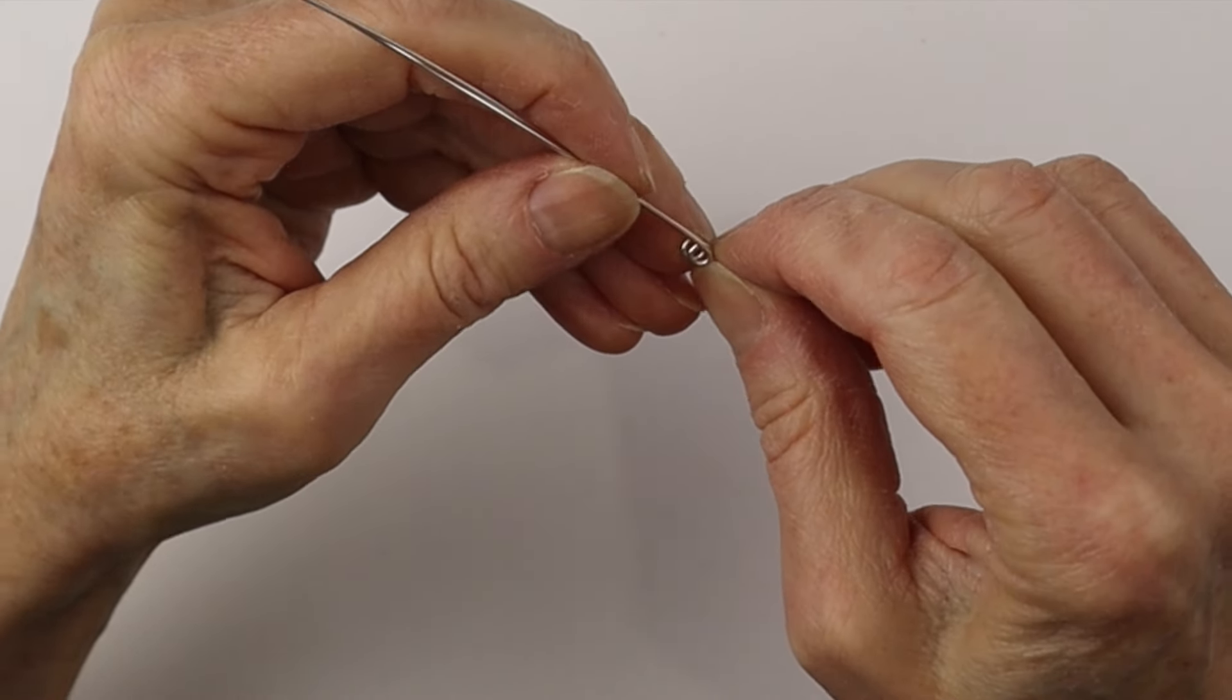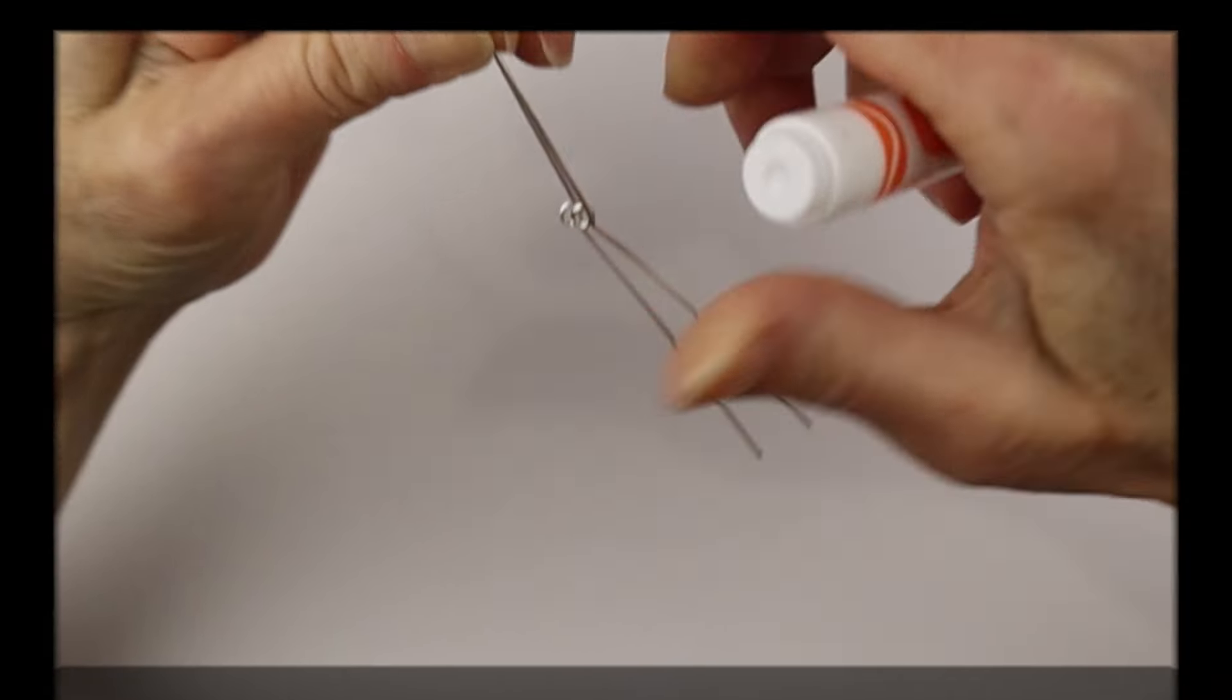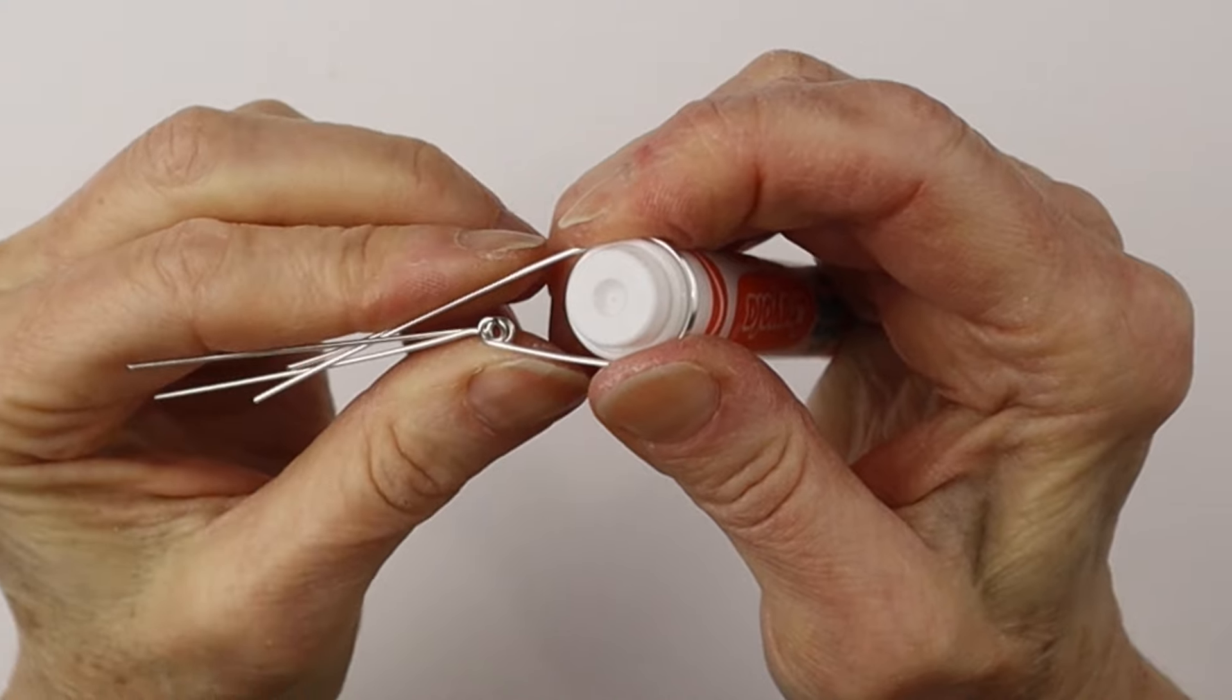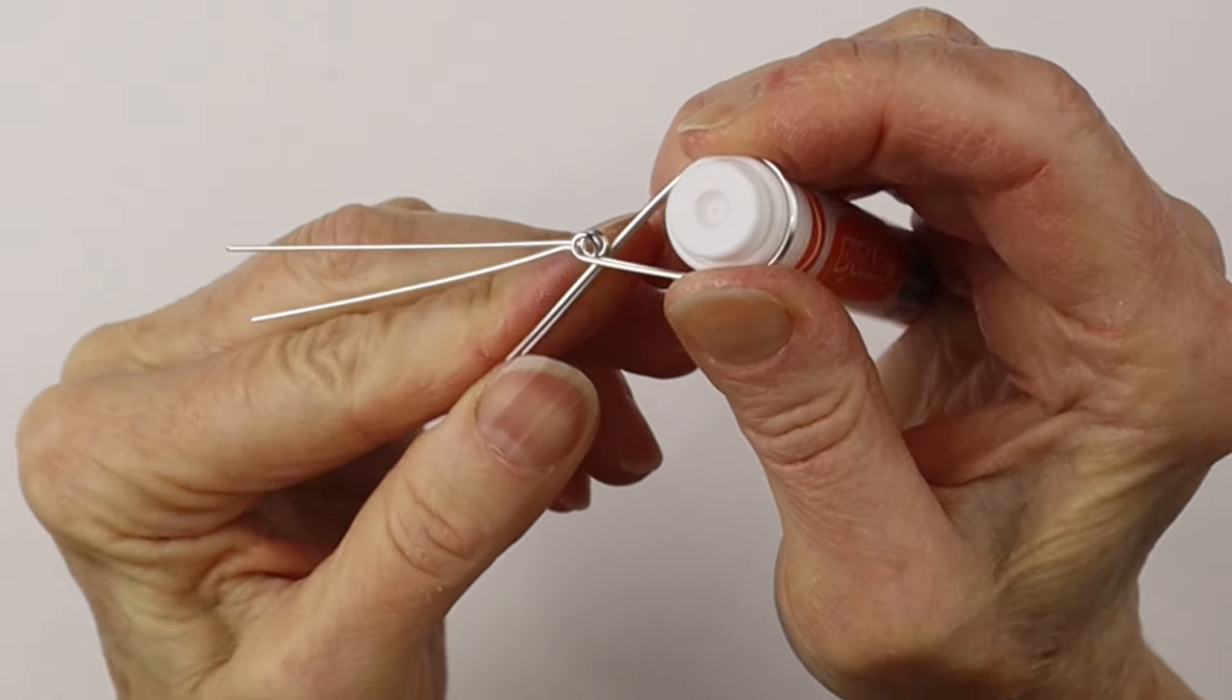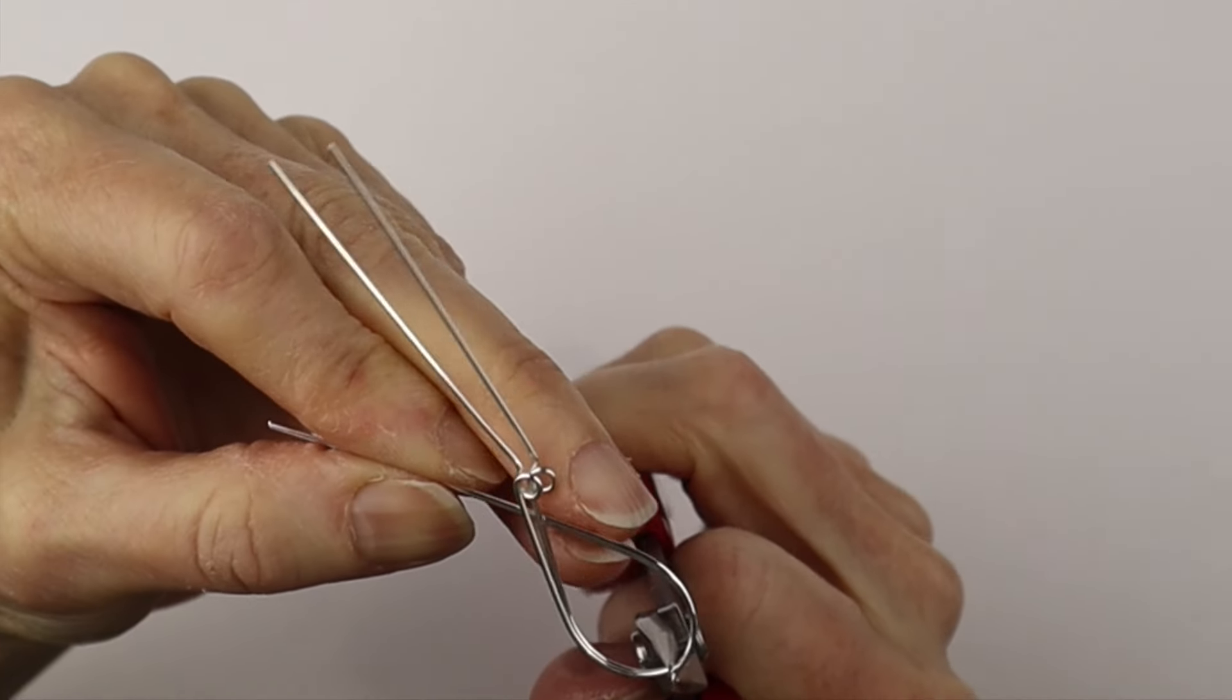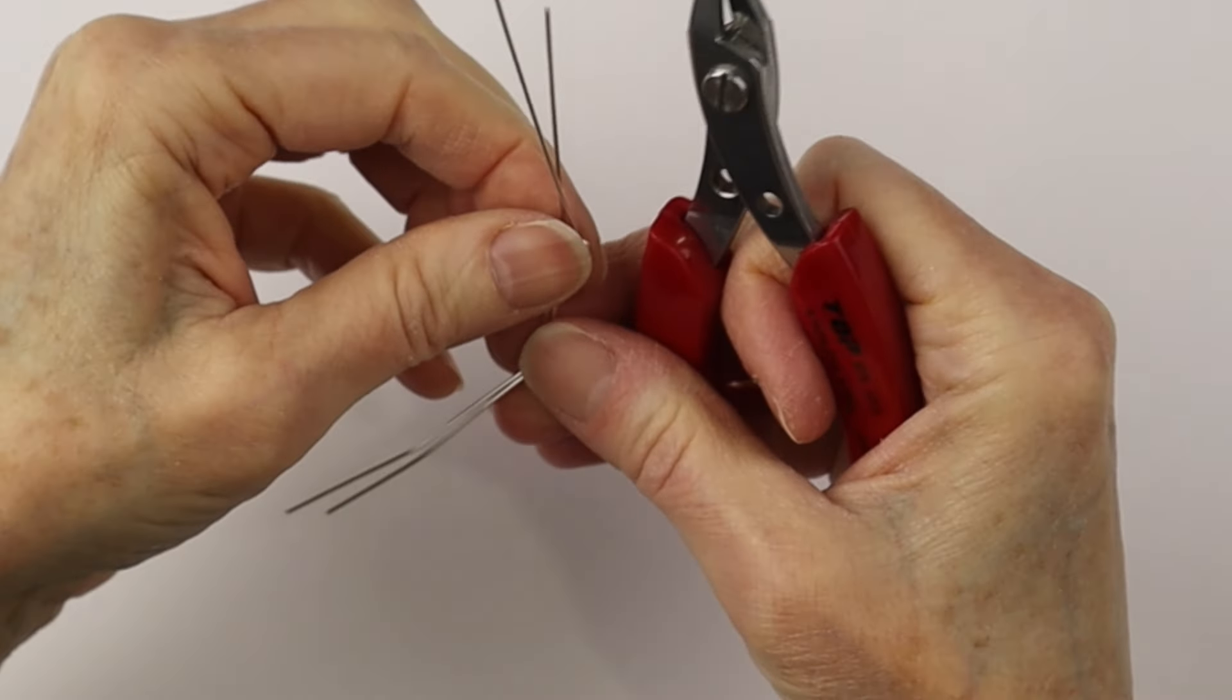Now we are going to put the two pieces together so we can make the teardrop the same size. Using a round form, we are going to wind the wires around. This is a Crayola marker I use a lot for the round part, and then we're just going to do a little jog at the bottom with our round nose pliers.